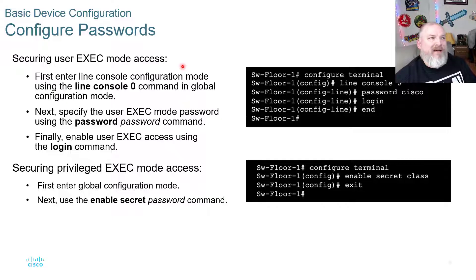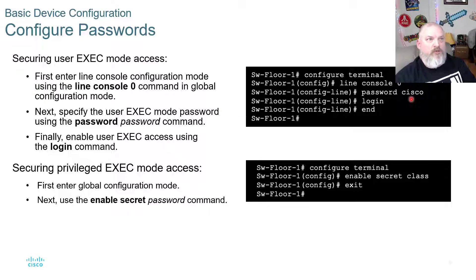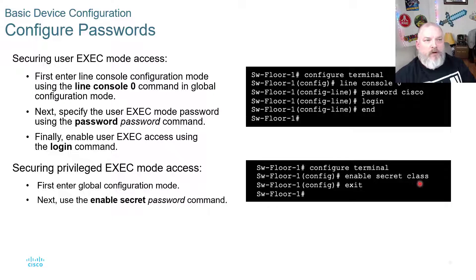Configuring passwords: securing user exec mode access on your switches or routers is important. First, enter line console configuration mode by typing 'configure terminal', then use the 'line console 0' command in global configuration mode. Next, specify the user exec mode password using the 'password' command followed by your password — in this case 'Cisco' for the lab. Then type 'login' to enable user exec access. To secure privilege exec mode, go into configure terminal, type 'enable secret', enter your password, then type 'exit'.